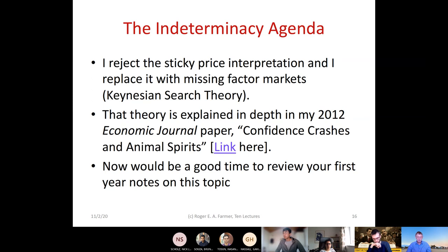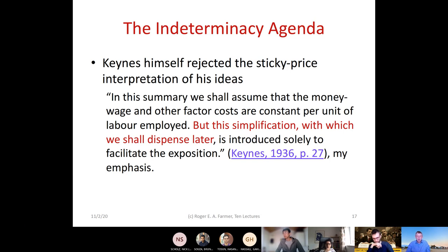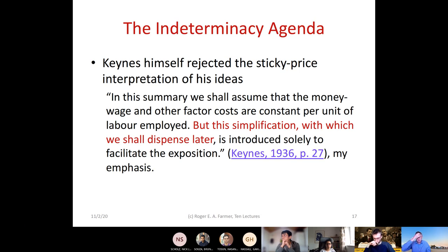Why would you reject sticky prices? Whether or not Keynes rejected it is not the point — it's inconsistent with data. Many people cite the fact that the General Theory initially assumes sticky wages. But Keynes himself writes: 'we shall assume that the money wage and other factor costs are constant per unit of labor employed' — and then explicitly states: 'this simplification, with which we shall dispense later, is introduced solely to facilitate the exposition.' So Keynes did not think his work was based on sticky prices.